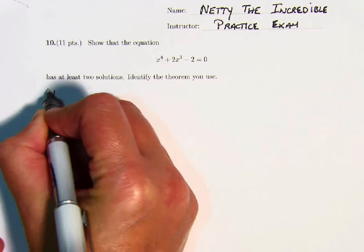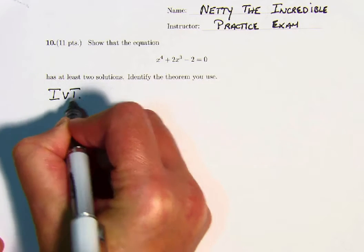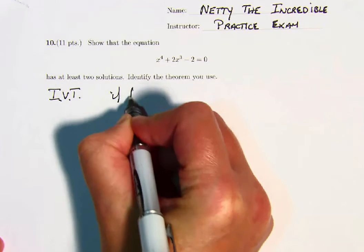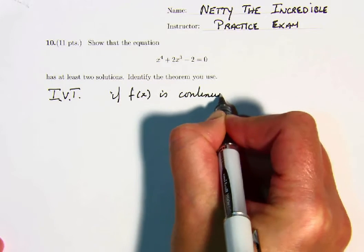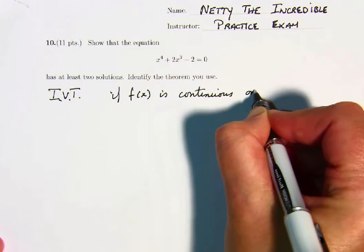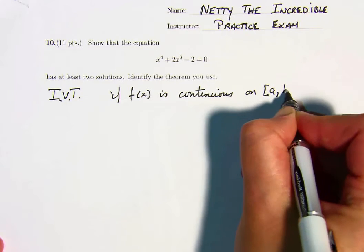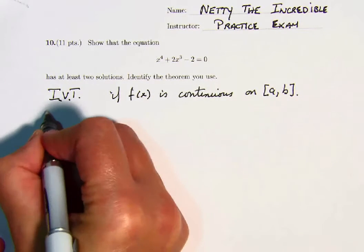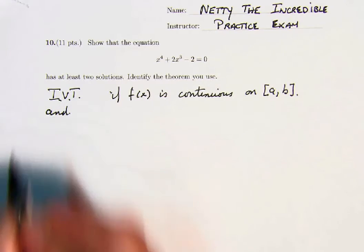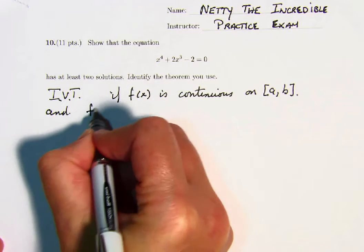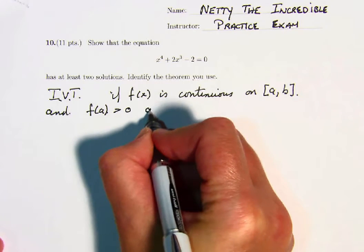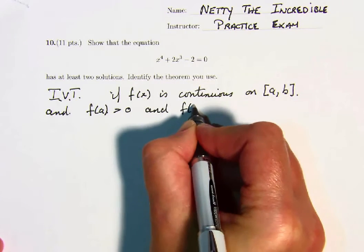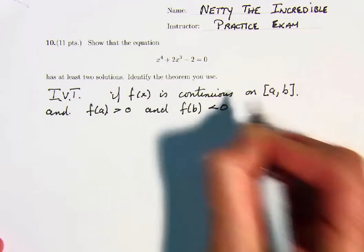the Intermediate Value Theorem says that if f of x is continuous on the closed interval from a to b, and f of a is, say, greater than 0, and f of b is less than 0,